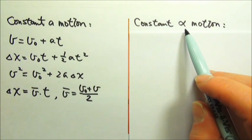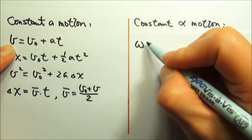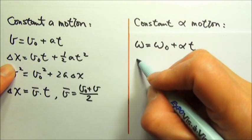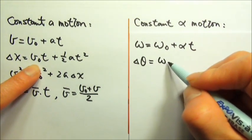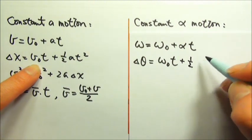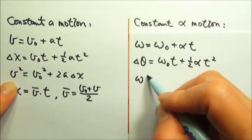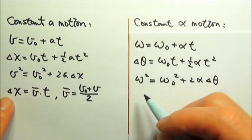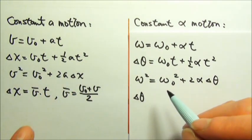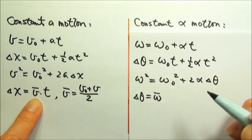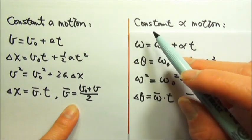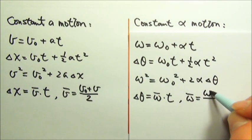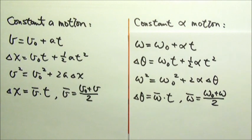For constant angular acceleration motion, we have something similar. The final angular velocity equals the initial angular velocity plus angular acceleration times time. The angular displacement is initial angular velocity times time plus one-half alpha T squared. The final angular velocity squared is the initial squared plus 2 alpha delta theta. And the angular displacement is the average angular velocity times time — where the average angular velocity can be found by averaging the initial and final angular velocities.